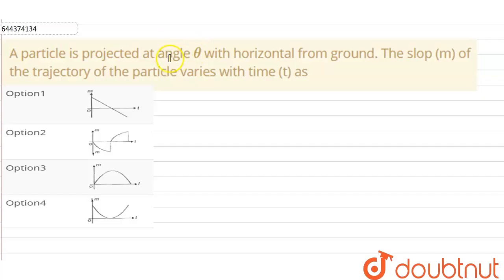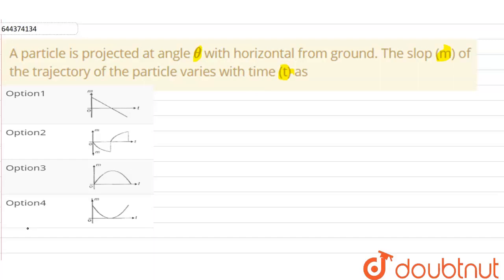Hello everyone. Our question is: a particle is projected at an angle theta with the horizontal from the ground. The slope m of the trajectory of the particle varies with time t. We have to find which of the following graphs represents the slope of the trajectory varying with time t.